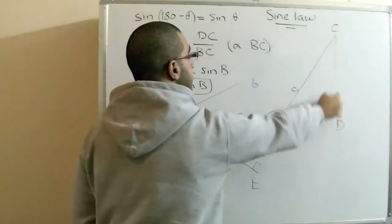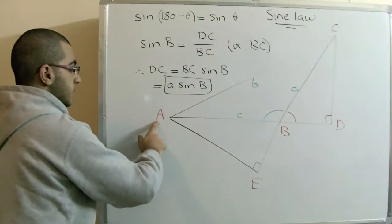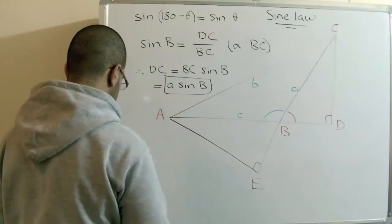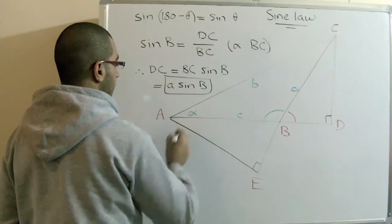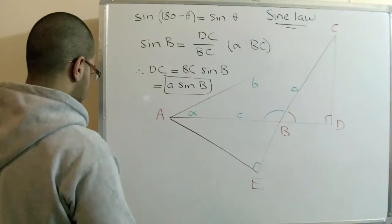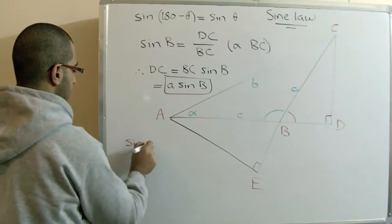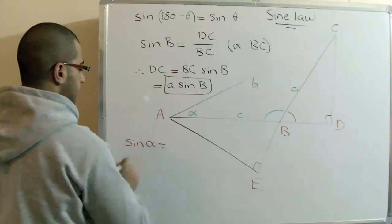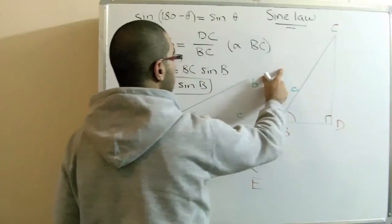So in the triangle ADC, sine angle A, this angle here, alpha, equals the DC over the B.